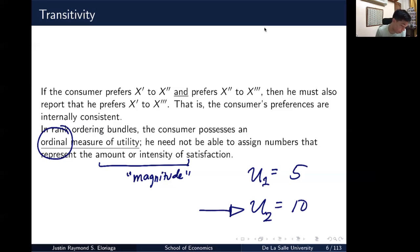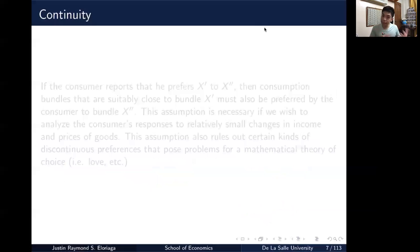Utility is a mere ordinal measure. And this is something I will stress on and on. Utility is a mere ordinal measure, not a cardinal measure. So it cannot imply magnitude. It can only imply a degree of order. So that's the second assumption.